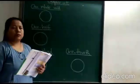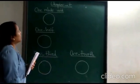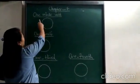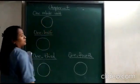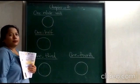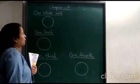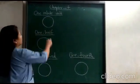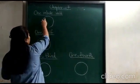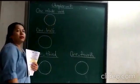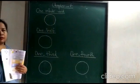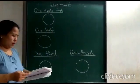So, let's start with one-fourth unit. This is one-fourth unit of a circle. One-fourth unit is without any lining or without any partition.